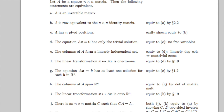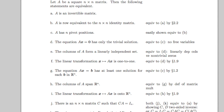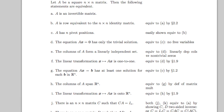A is an invertible matrix. A is row equivalent to the n×n identity matrix.